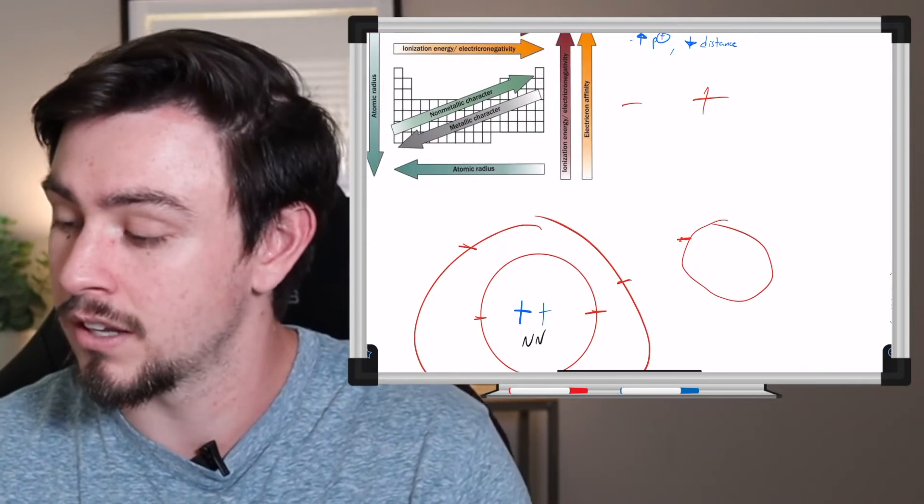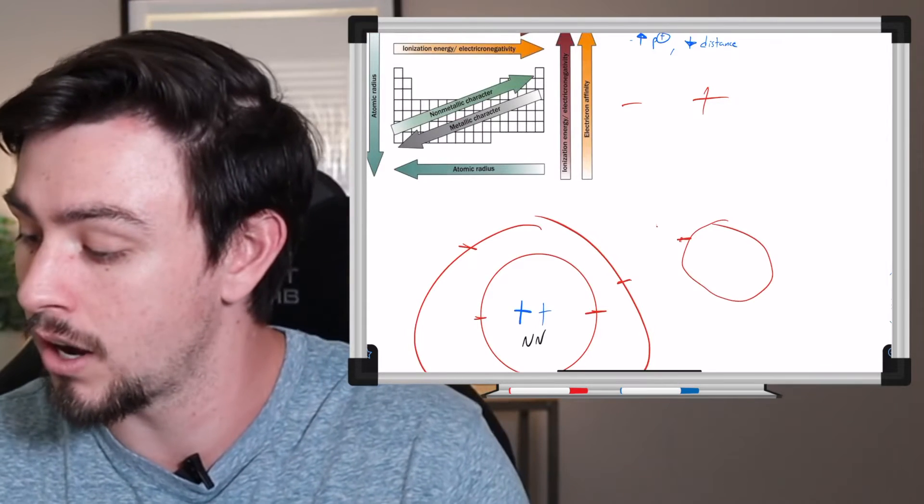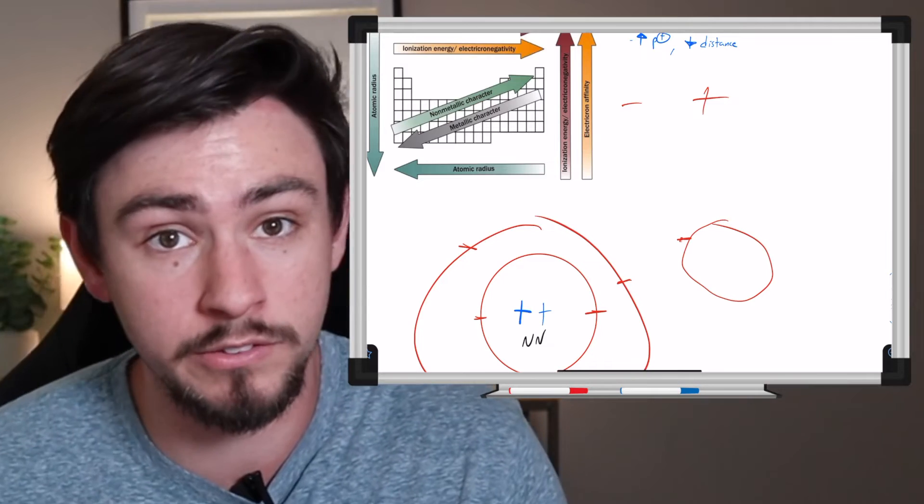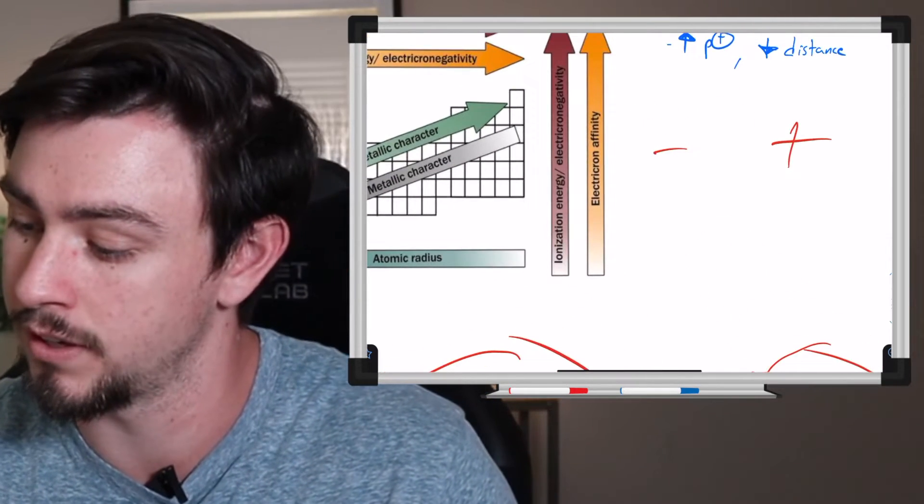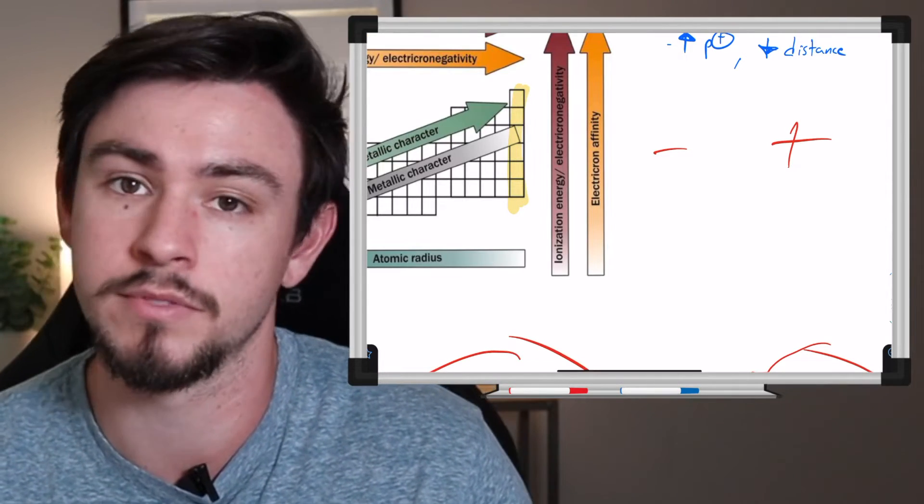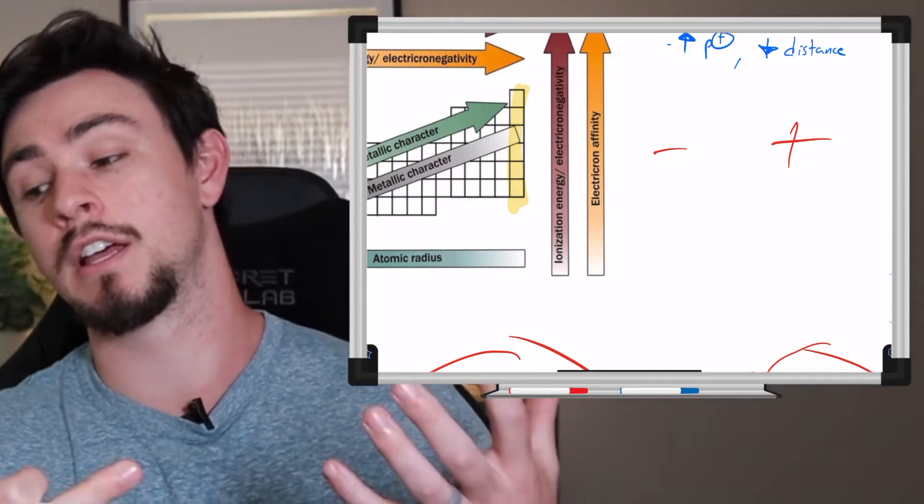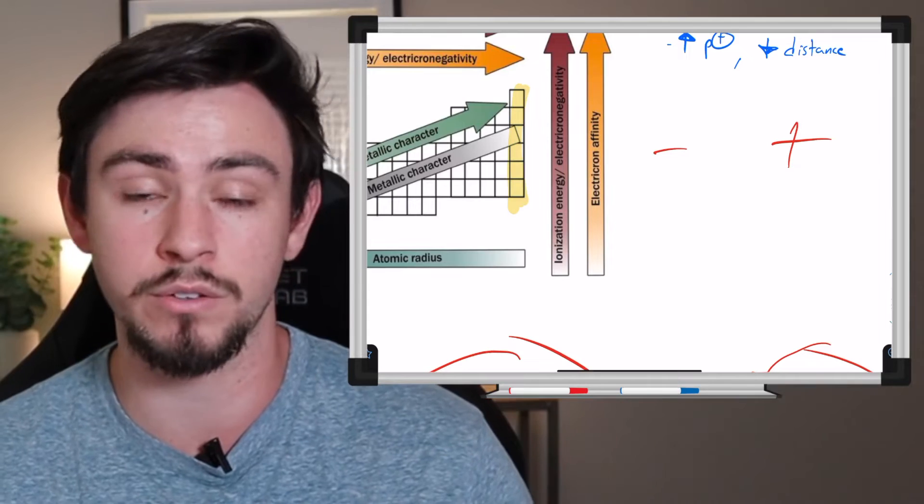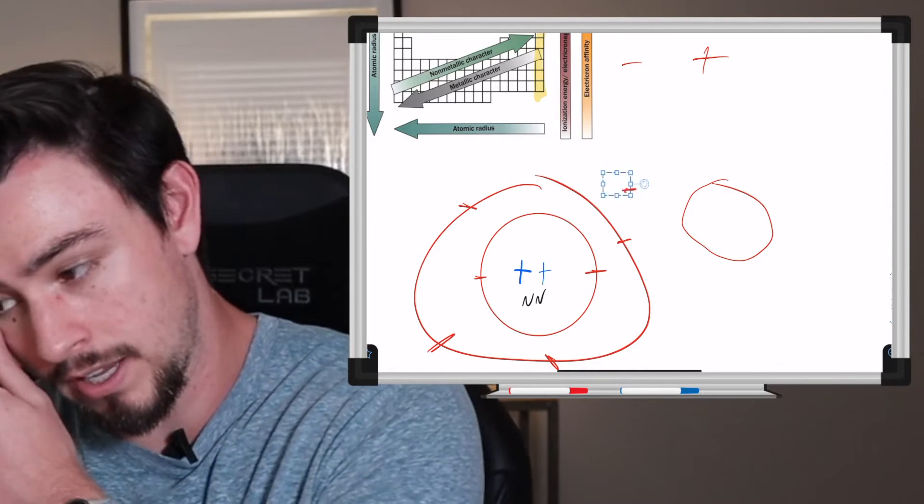So that trend increases, your electronegativity increases, as you go up and to the right on the periodic table. Now there's one notable exception to that, and that is this row right here, the noble gases. So they are not really keen on attracting other electrons because all their valence shells are filled. So they're kind of at peace. They're married. They're not trying to attract anybody else.